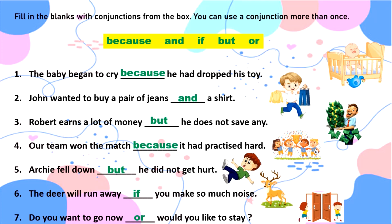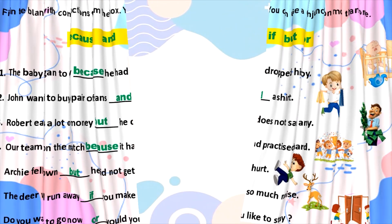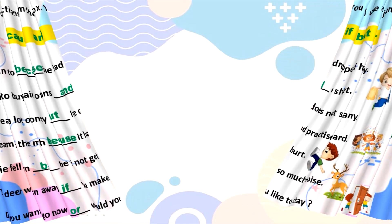Here are the answers. The baby began to cry because he had dropped his toy. John wanted to buy a pair of jeans and a shirt. Robert earns a lot of money but he does not save any. Our team won the match because it had practiced hard. Archie fell down but he did not get hurt. The deer will run away if you make so much noise. Do you want to go now or would you like to stay?